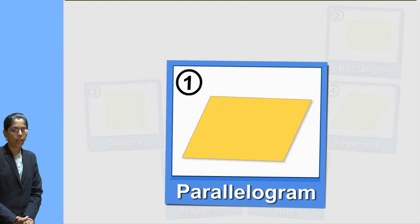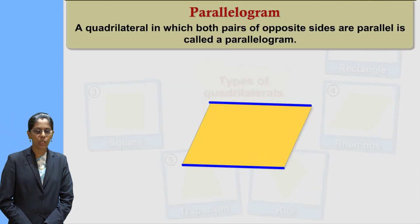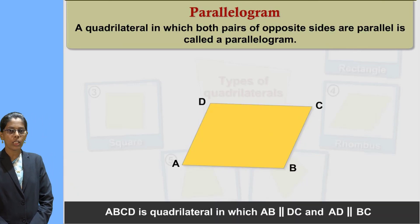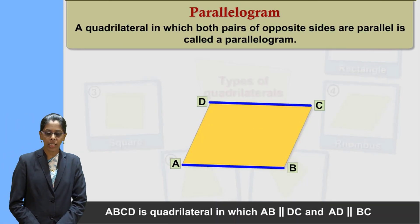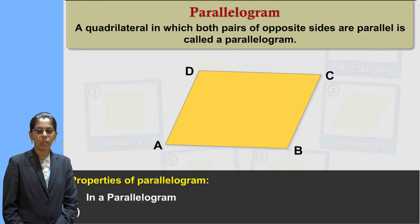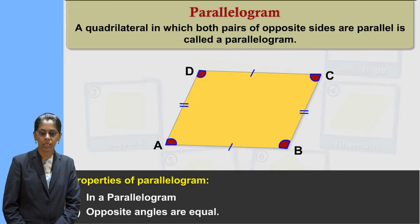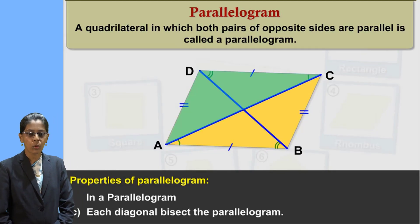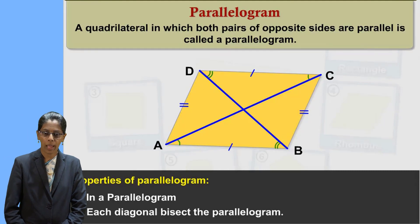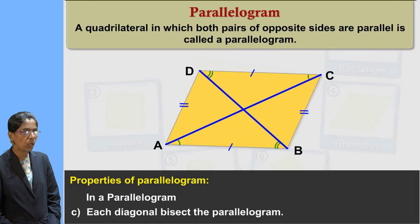Let us see the first type: parallelogram. What is meant by parallelogram? A quadrilateral in which both pairs of opposite sides are parallel is called a parallelogram. The properties of a parallelogram are: opposite sides are equal, opposite angles are equal, and diagonals of a parallelogram bisect each other. These are the properties of a parallelogram.